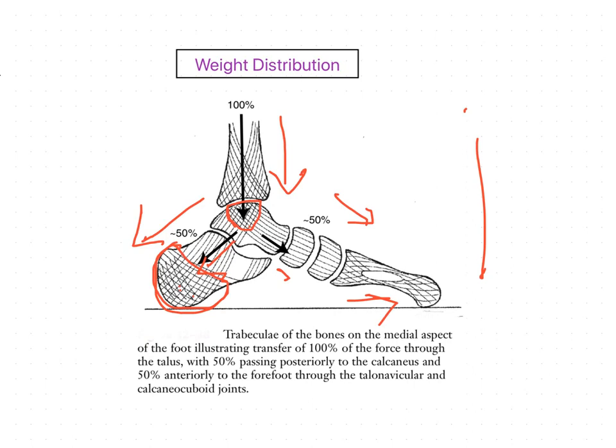It sends the remaining 50% or less than 50% to the navicular calcaneum and calcaneo cuboid joints, and then to the cuneiforms. Next it reaches to the metatarsals.